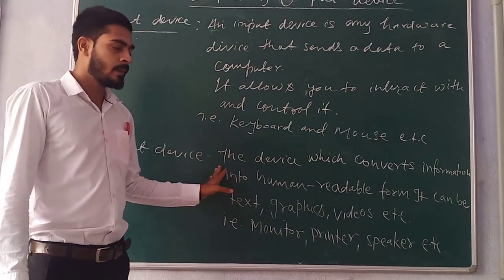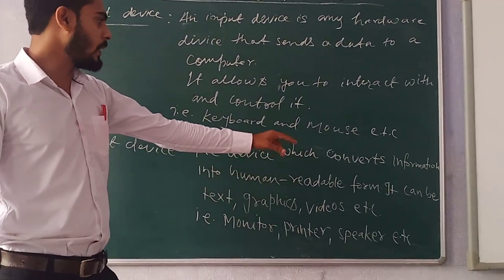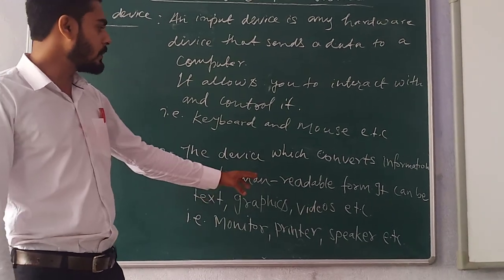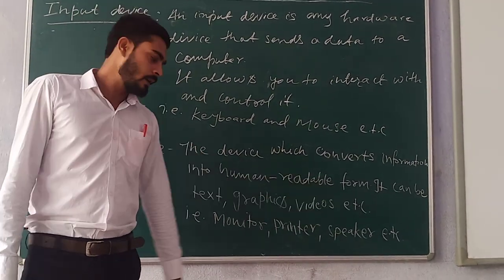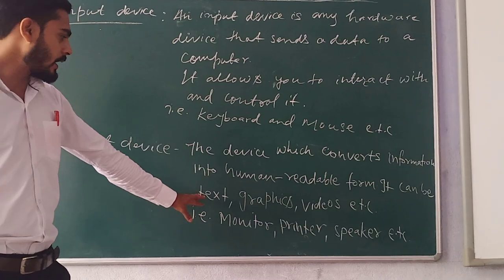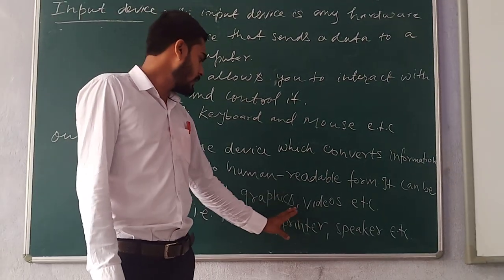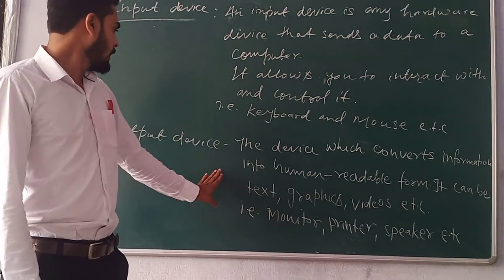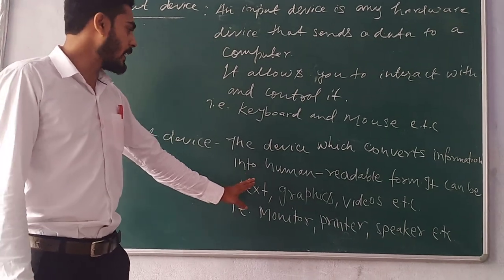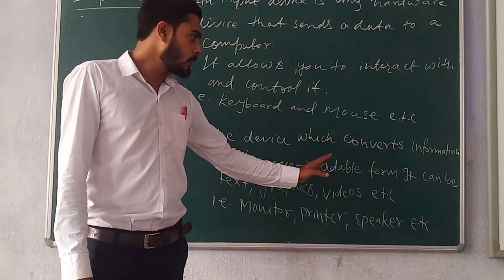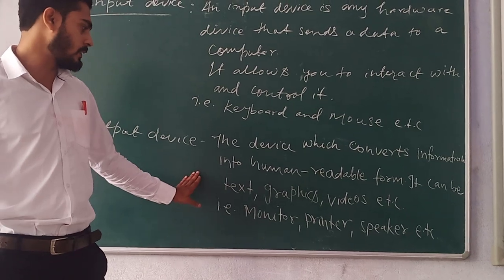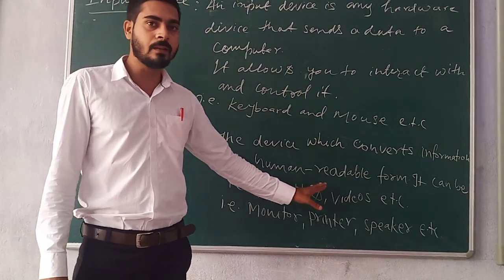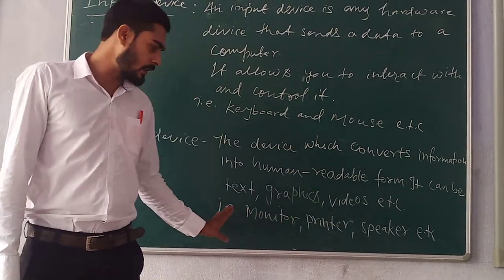Output device. The device which converts information into human readable form. It can be text, graphics, video, etc. Output device converts data into text, graphics, or video.